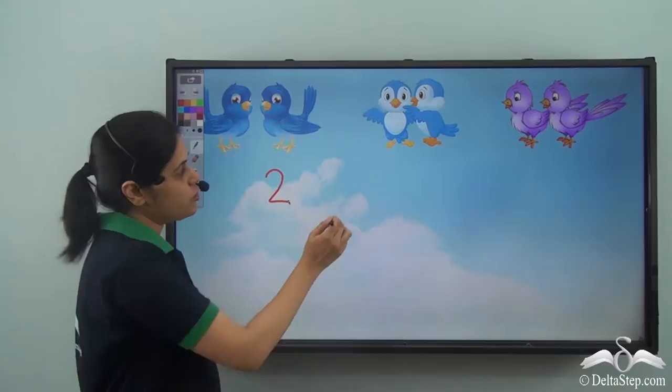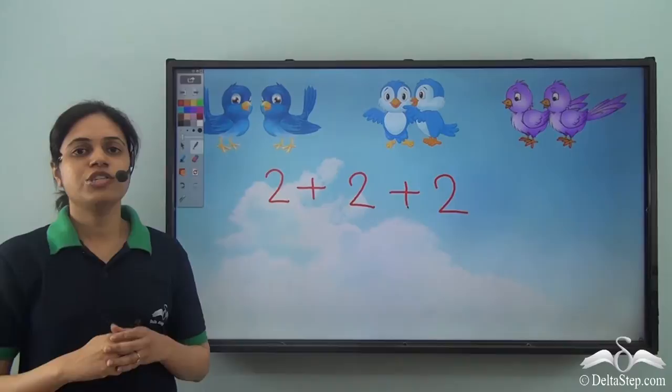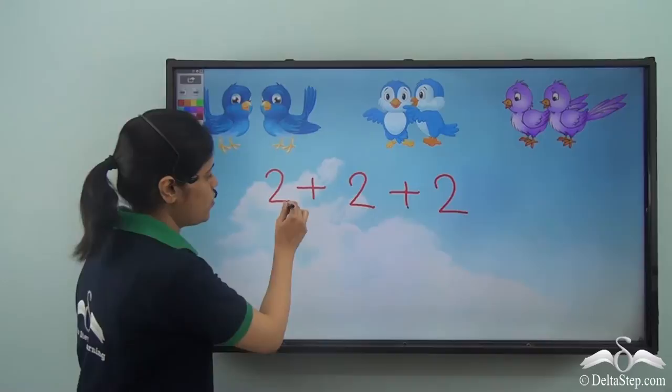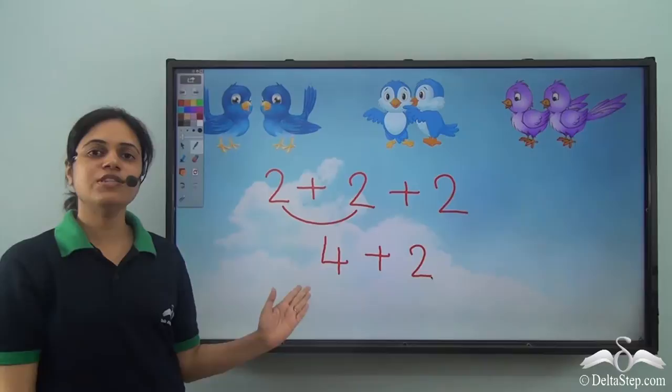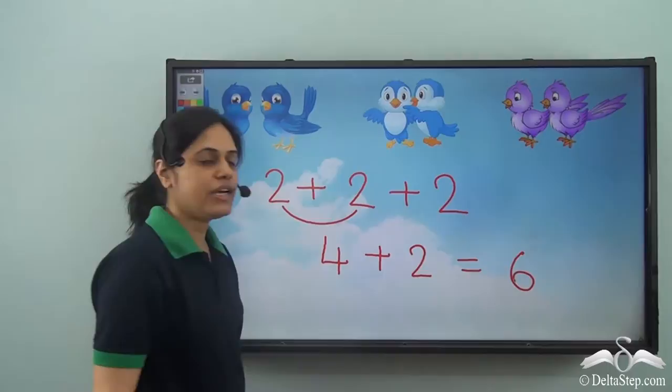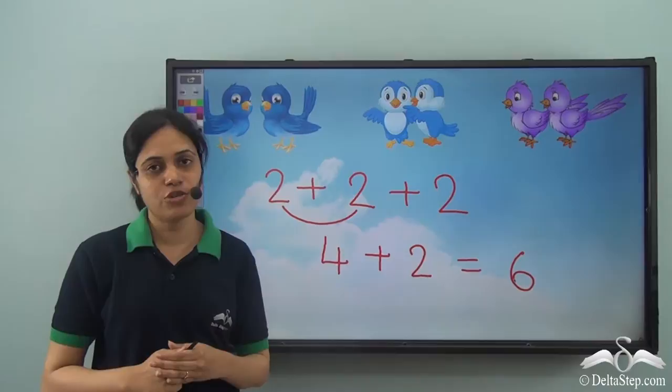There are two birds on the first window, two on the second, and two on the third. Sarah knows how to add, so she tries to add these. When we add two, two and two — that is two plus two gives us four, and then four plus two is six. So in total there are six birds on the windows.